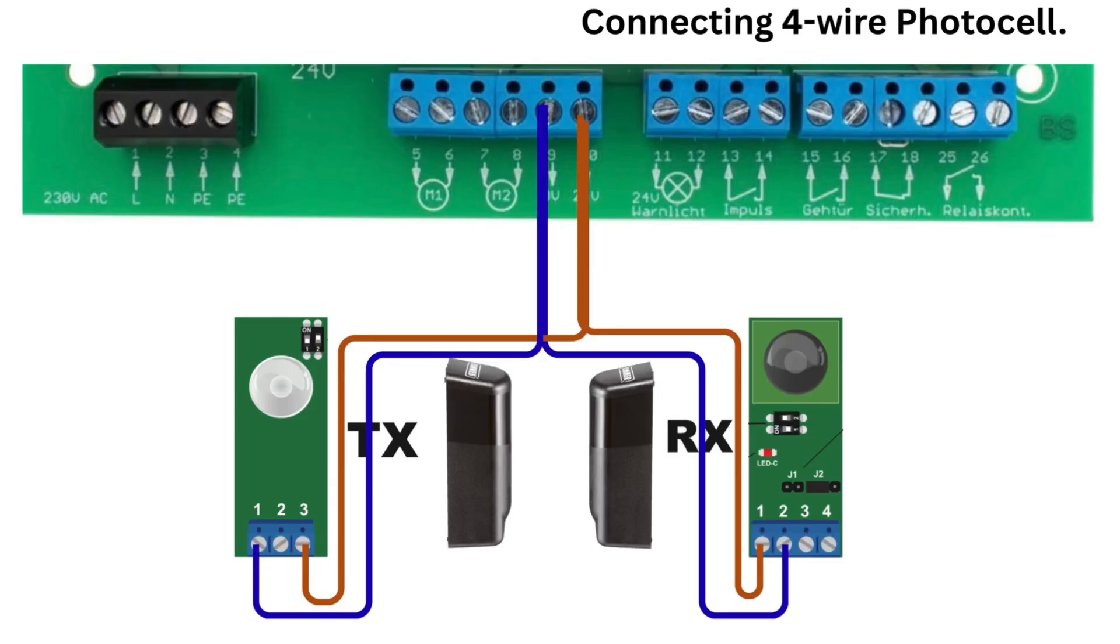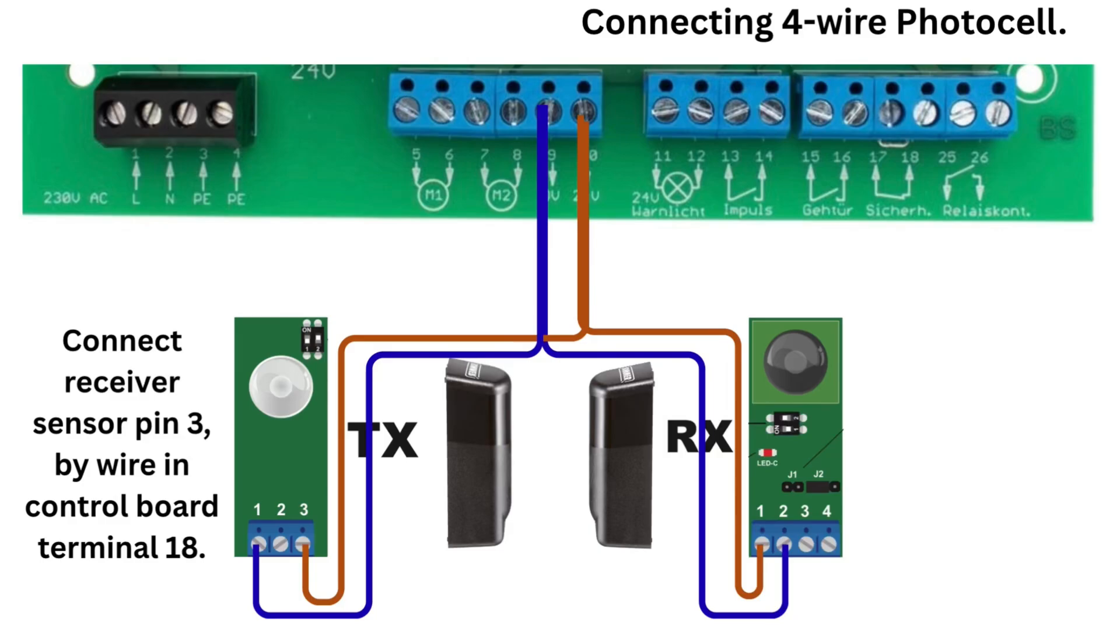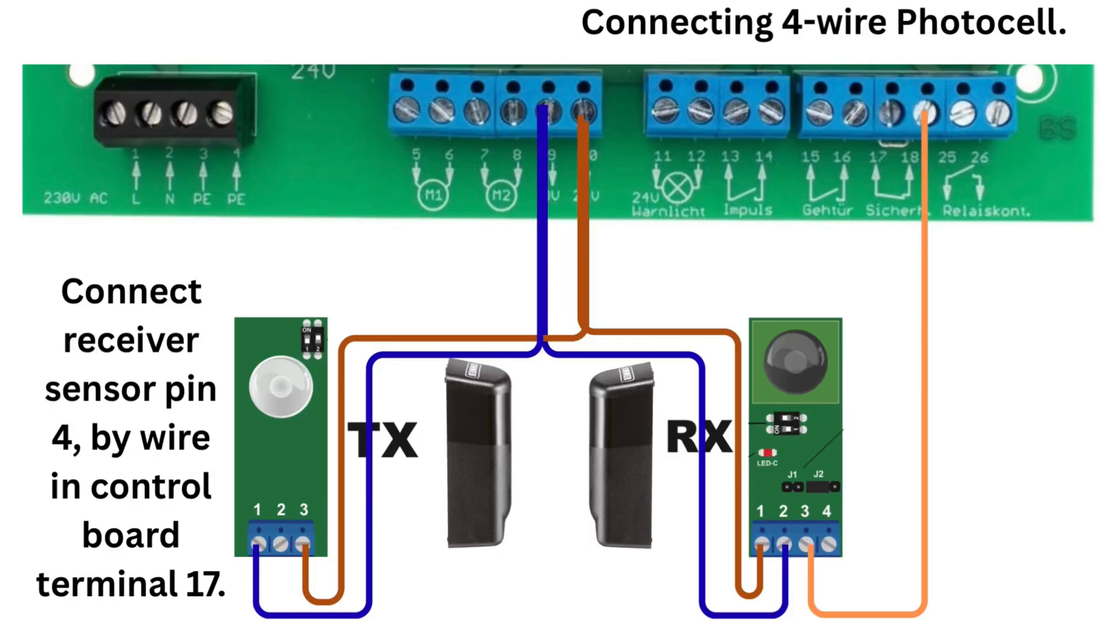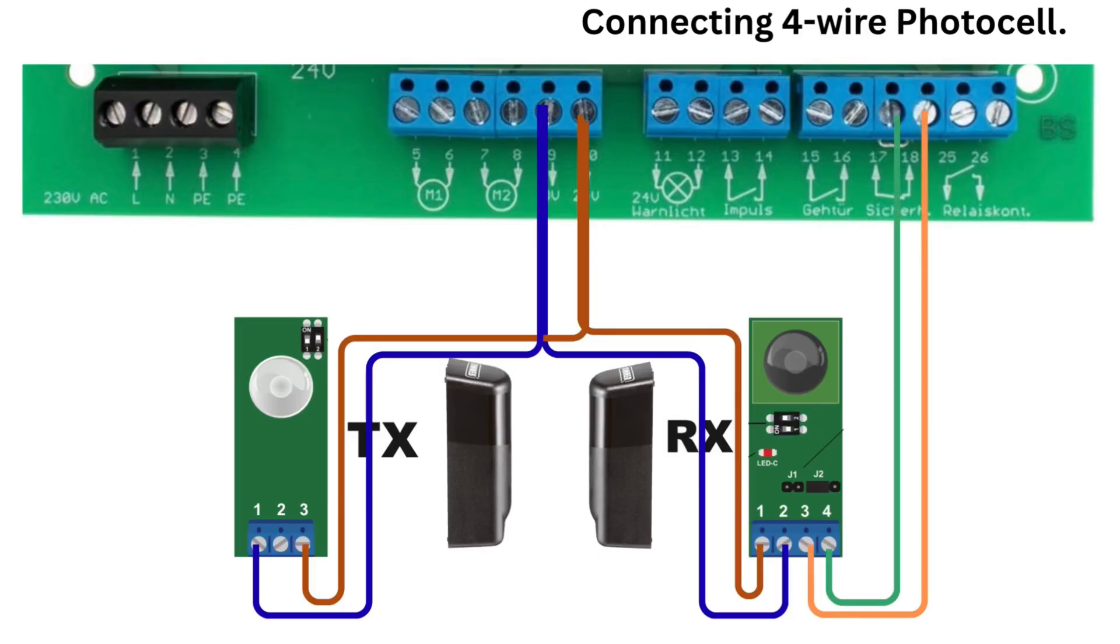Now connect safety of the control board on receiver sensor. Connect receiver sensor pin 3 by wire in control board terminal 18. Terminal 18 is common terminal of photocell safety. Connect receiver sensor pin 4 by wire in control board terminal 17. Terminal 17 is a pin of photocell signal.